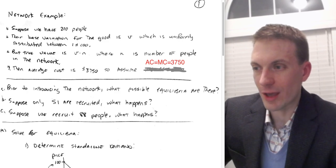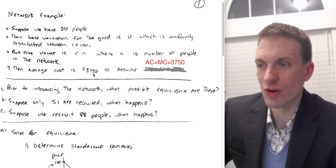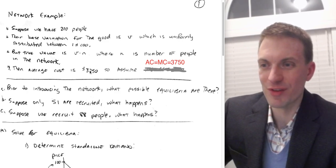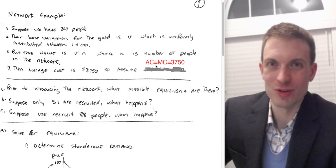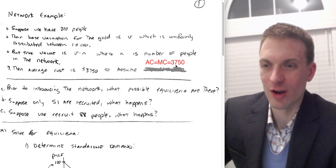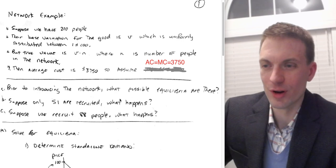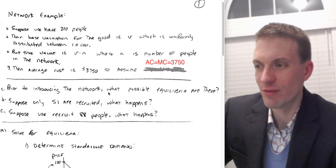We're going to assume we have a constant average cost and constant marginal cost of 3750.